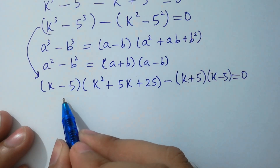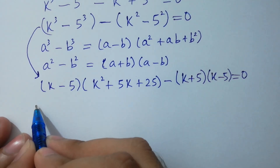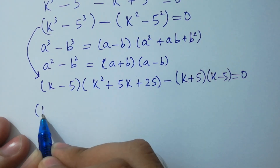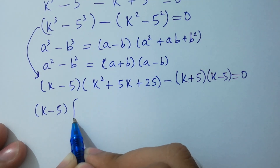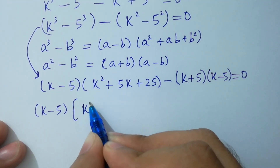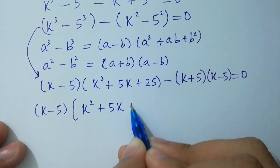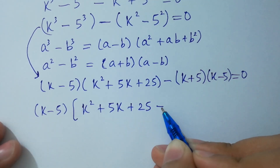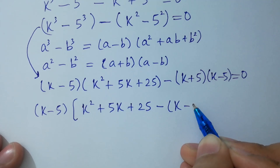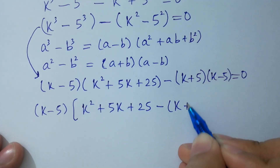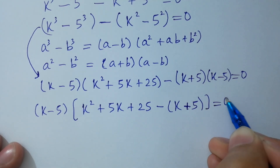We see that (k minus 5) is common to both terms, so we factor it out. This gives (k minus 5) times (k squared plus 5k + 25 minus (k plus 5)) equals 0.